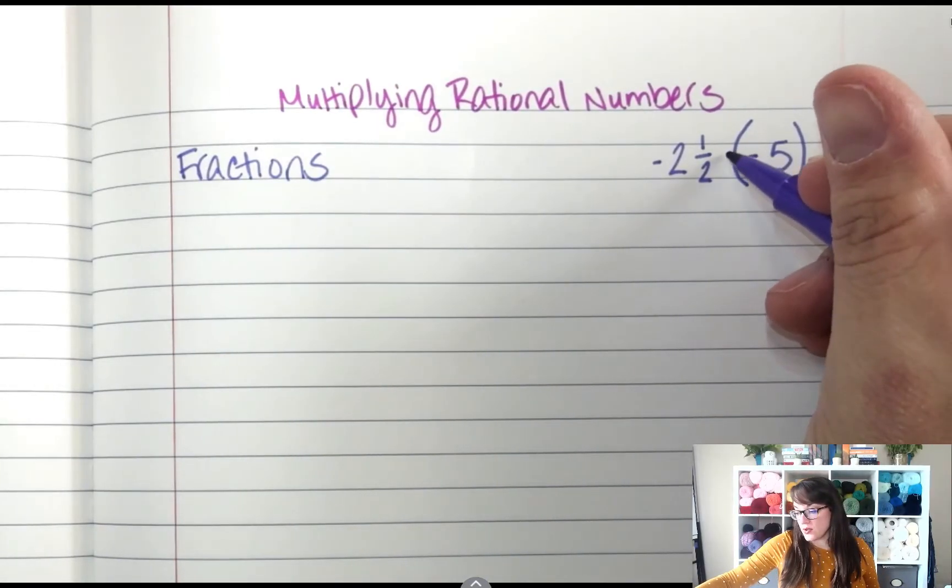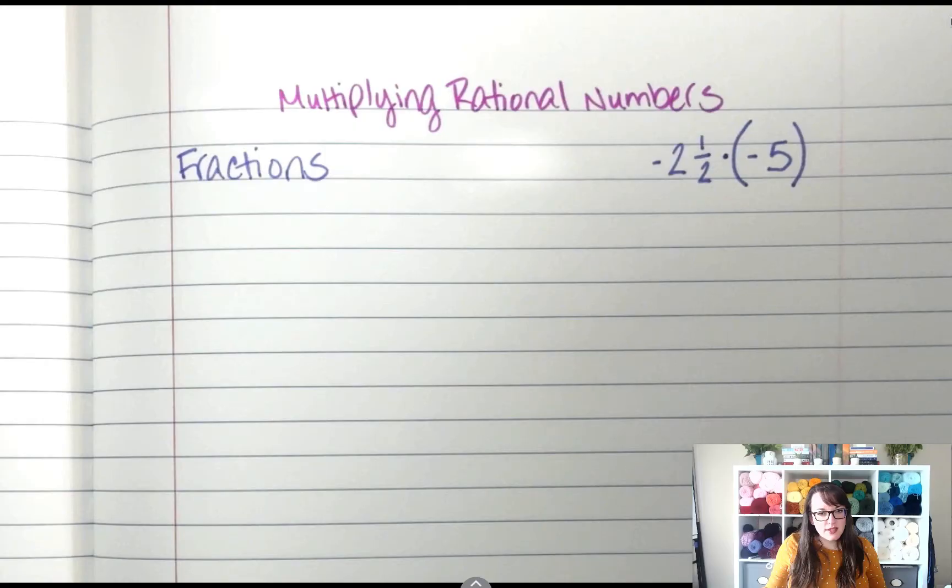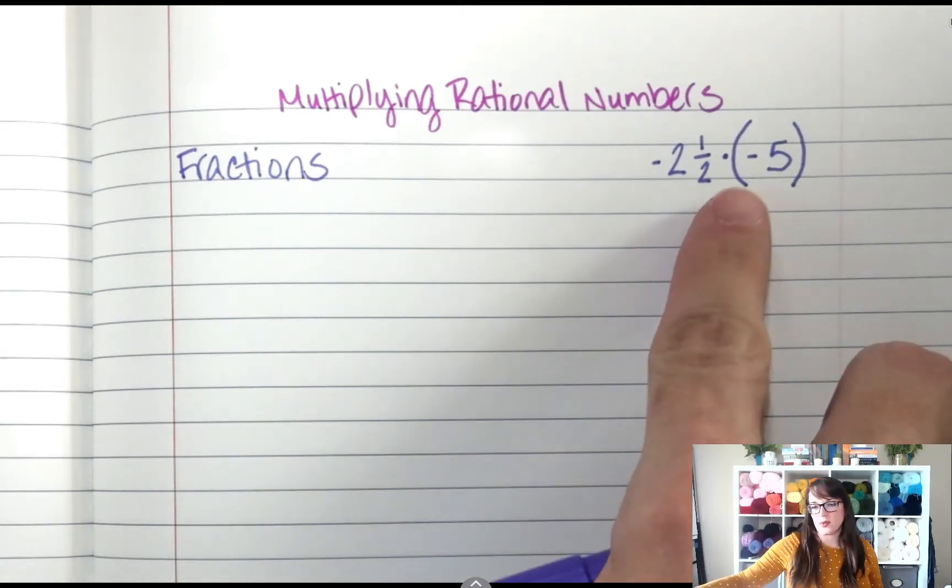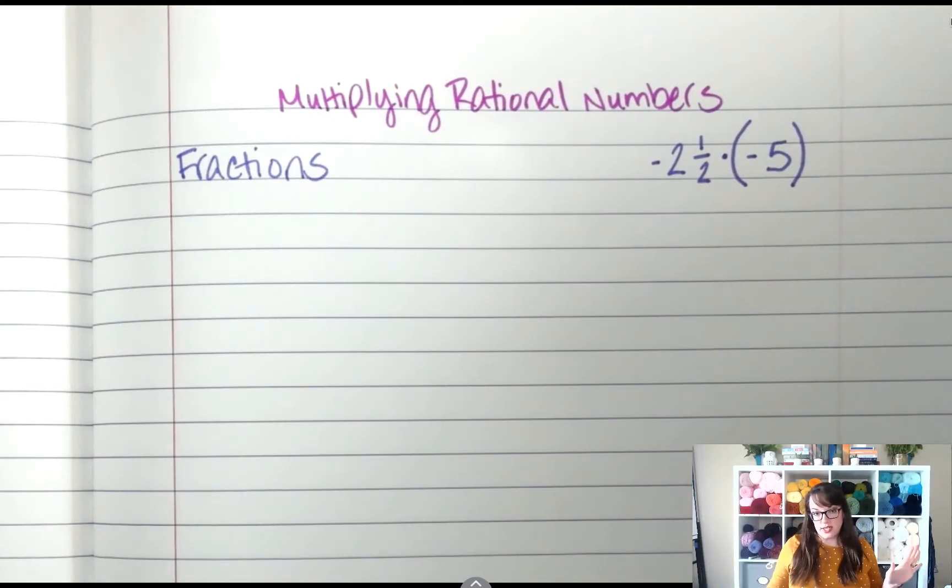And we can also use the dot. We try not to use an x in seventh grade because the x starts to stand for a letter or a variable. And then if you have an x next to a multiply sign, that can get kind of confusing. So we stick with the dot or no sign at all.